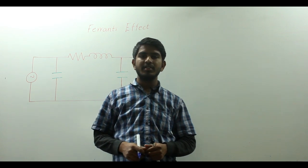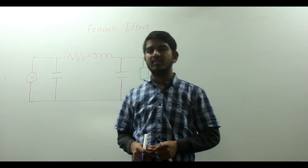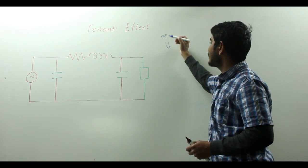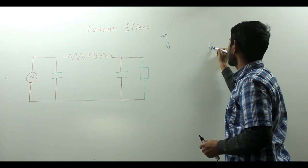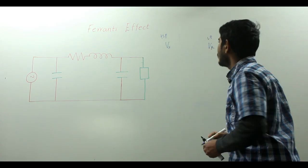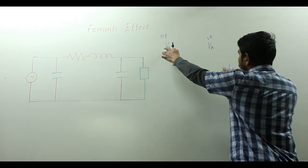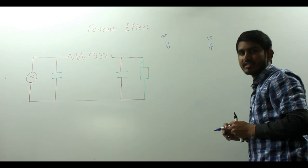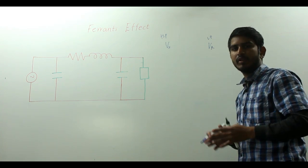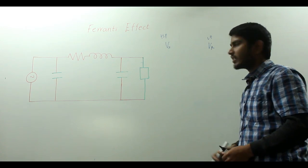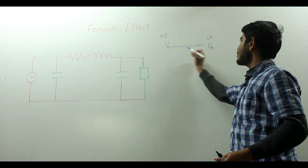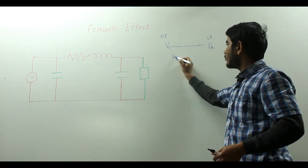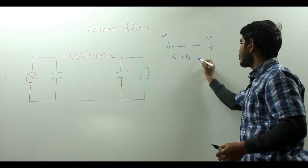We know that current always flows from a region of higher potential to a region of lower potential. So if Vs is the sending end voltage at higher potential and Vr is the receiving end voltage at lower potential, the supply end voltage Vs will always be greater than the receiving end voltage Vr because of line losses in the transmission line.